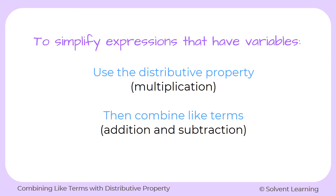To simplify expressions that have variables, we still follow the order of operations, but we have to use the new methods we've learned. First, we apply the distributive property, which is the multiplication step of the order of operations. And then we can combine like terms, which is the addition and subtraction step. So just remember: distributive property first, and then combine like terms, and you'll be able to simplify those expressions that have variables.